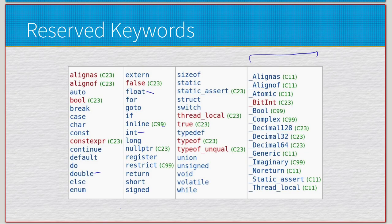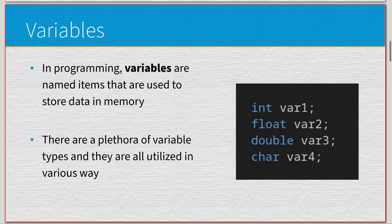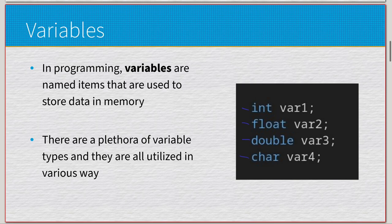Variables are named items used to store data in memory. We have four right here: integers, floats, doubles, and characters — known as int, float, double, and char. So in this format we have int var1, float var2, double var3, and char var4.